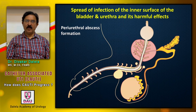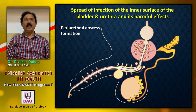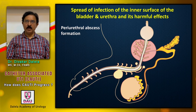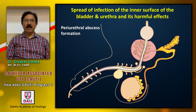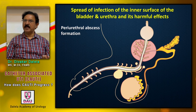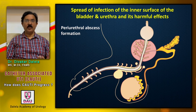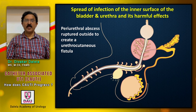Here is an example of a patient who has an indwelling catheter in the urethra and has developed a peri-urethral abscess. The commonest site is the penoscrotal junction. Once this abscess develops, the patient will complain of painful swelling in the perineum and fever. If you are not careful and don't treat it in time, it will rupture outside and the patient will develop a urethrocutaneous fistula.